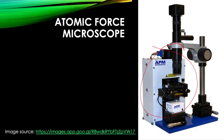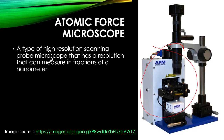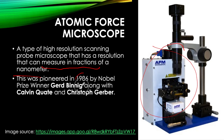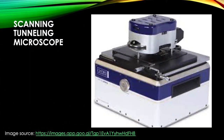Second is the atomic force microscope. This is a type of high-resolution scanning probe microscope that has a resolution that can measure in fractions of a nanometer, meaning it can see even more depth. It was invented in 1986 by Nobel Prize winner Gerd Binnig, alongside his colleagues Calvin Quate and Christoph Gerber — the three who pioneered the atomic force microscope.